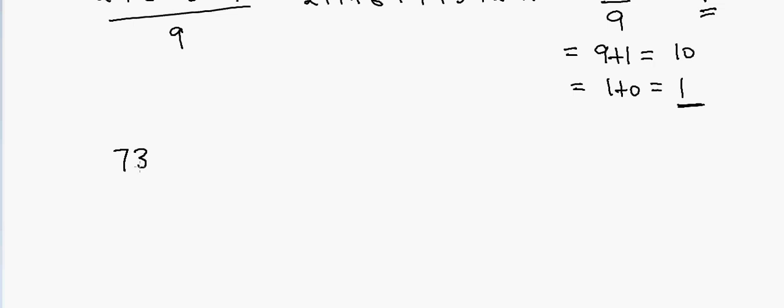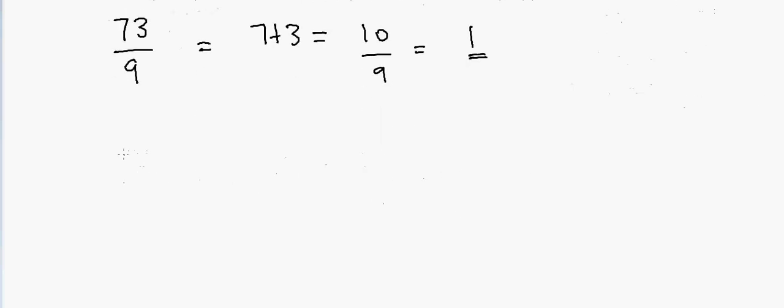If I have 73 and I want to divide by 9, we know that 7 + 3 = 10, and if I divide 10 by 9, my remainder will be equal to 1.